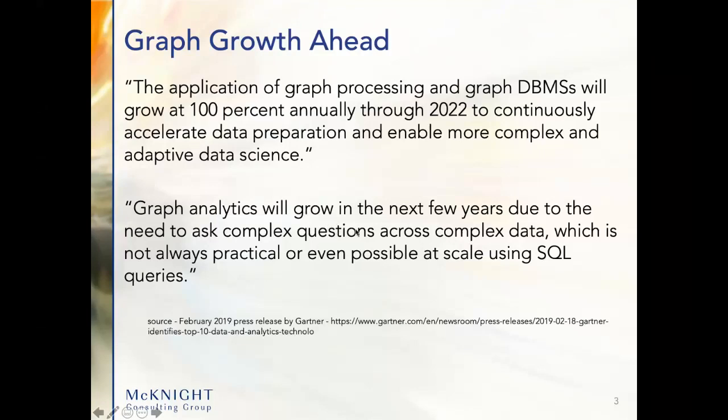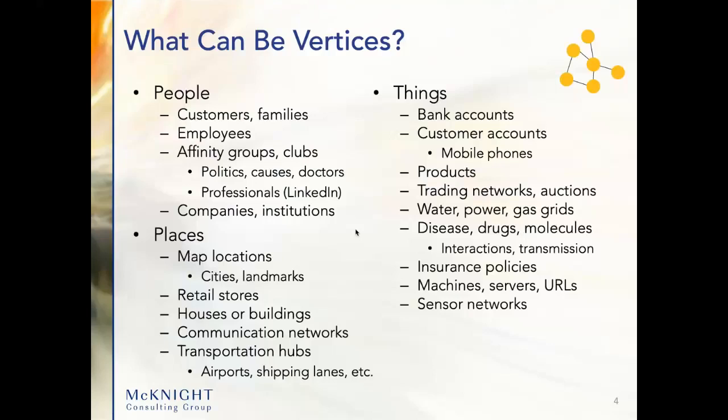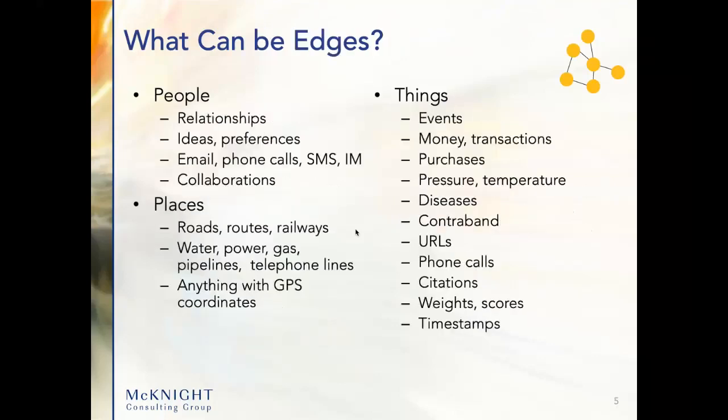Graphs are based on vertices and edges. Vertices are basically the nouns of your organization — the major nouns. You want to put in the ones where a change in one vertex has an impact on adjacent and other vertices. This ends up being customers, employees, people in companies, different places, bank accounts, contracts, products, and so on. These vertices are connected by edges, which are the relationships.